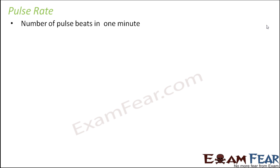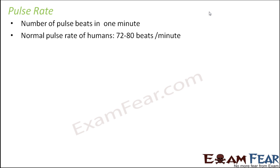Pulse rate is the number of pulse beats in one minute. If you touch your wrist or neck and count the beats for one minute, it will normally come to around 72 to 80 times per minute. That is the normal pulse rate for human beings.